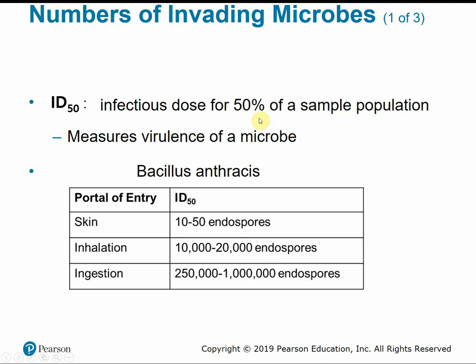The ID50, or infectious dose for 50% of a population, helps us measure the virulence of a microbe, but this can vary based on the portal of entry. Anthrax has multiple portals of entry, and the ID50 varies accordingly. If the portal of entry is the skin, it only takes a relatively small number of endospores to cause infection in at least 50%, whereas via ingestion, you need to ingest a much larger amount of endospores to become infected.